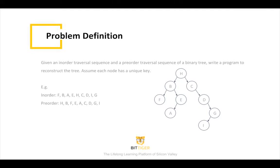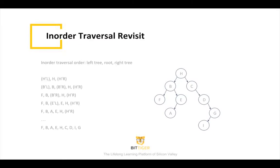The problem seems a little bit hard at first glance. Let's first review the basic knowledge about in-order traversal and pre-order traversal. For in-order traversal, the rule of thumb is to memorize the order of traversing: first print out all nodes in the left tree, then root, then all nodes in the right tree.